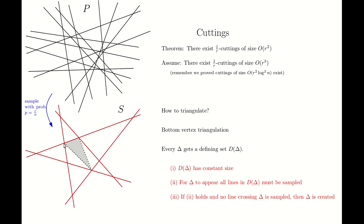The second property says that for a triangle to appear in a bottom vertex triangulation, all of the defining lines must be sampled. This property is obviously true. But the most important property of the bottom vertex triangulation is the third property: if all of the defining lines have been sampled, and if we have not sampled all of the crossing lines that intersect the triangle, then this triangle will be created in a bottom vertex triangulation.